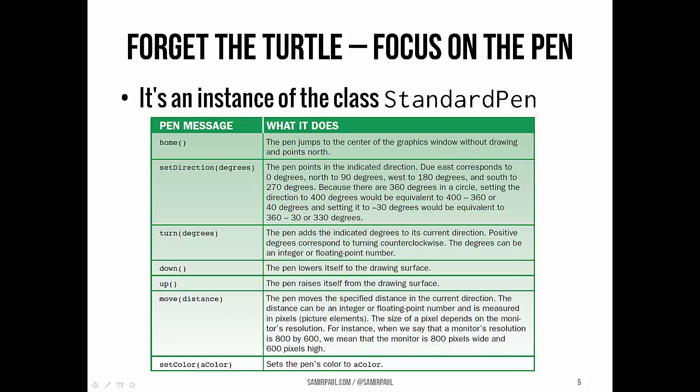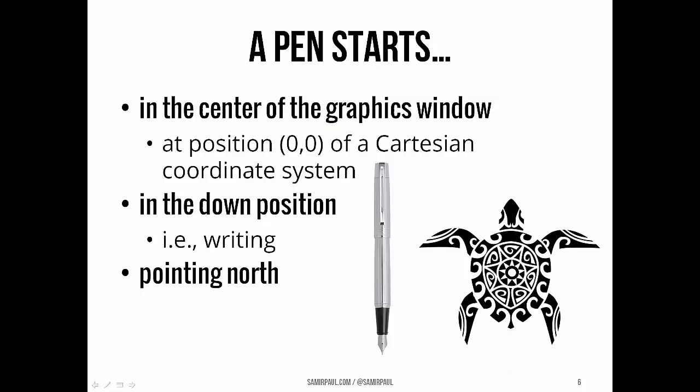We draw in a window and command a pen by calling methods that belong to the StandardPen class. You can see a bunch of them here: there's the home method, which takes us back to the center of the screen; set direction, which we can set to a cardinal direction anywhere from 0 to 360 degrees; we can also give it negative direction changes; we can turn it by some number of degrees; bring the pen up or down so it doesn't draw or does draw; move it a certain number of steps; and set its color. Initially, when we create a new pen, it will be in the center of the graphics window at (0, 0) in a normal Cartesian coordinate system. It's going to be down — in other words, writing — and it's going to point north. That means if we move it, the pen will by default move north until and unless we change its direction.